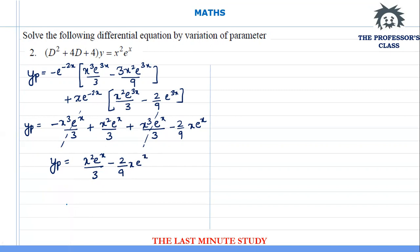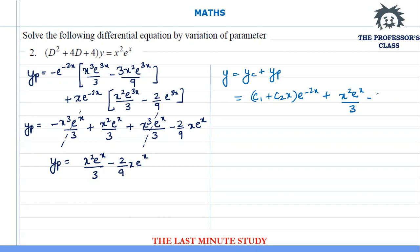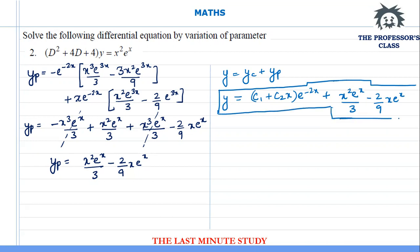The final solution is y = yc + yp, where yc = c1·e^(-2x) + c2·x·e^(-2x), and yp = x²·e^x/3 - 2x·e^x/9. This is the final answer for Question 2. Picking the correct integration by parts step is critical here.